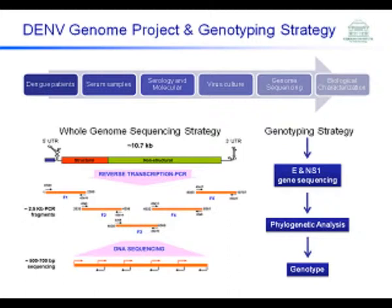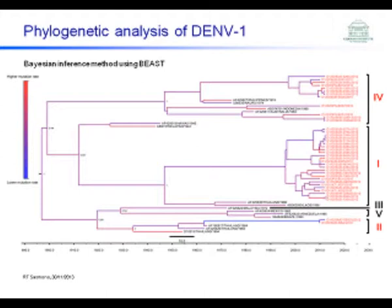After getting the serotype data on dengue in Indonesia, we performed genomic analysis to determine the genotypes of viruses in Indonesia using phylogenetic analysis. This is the method we are using at the moment. We grouped the dengue viruses in Indonesia into several genotypes. For dengue 1, there are basically three genotypes in Indonesia at the moment.